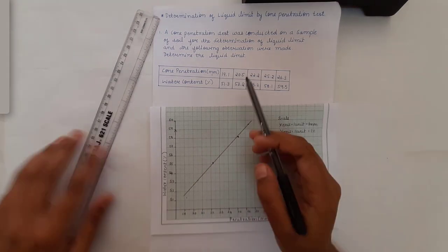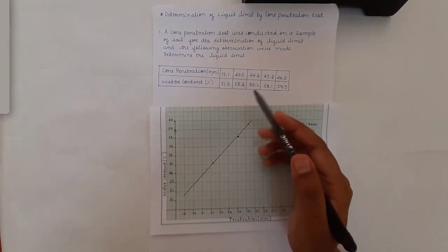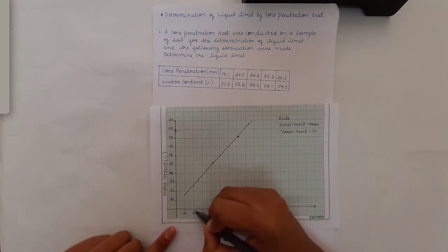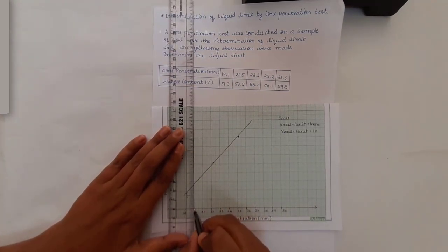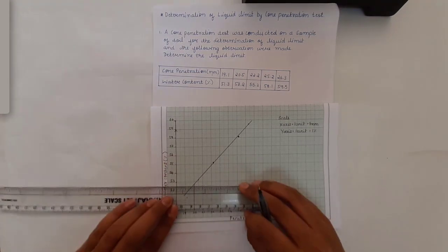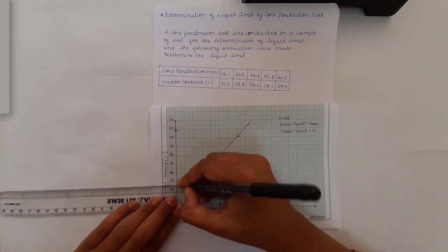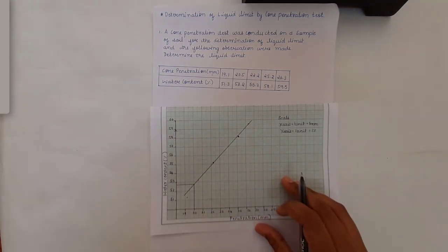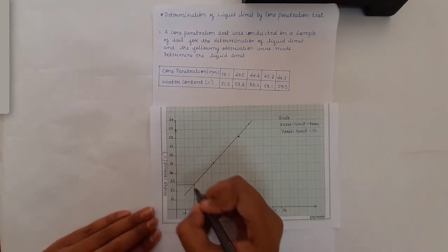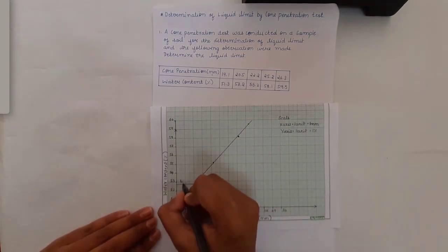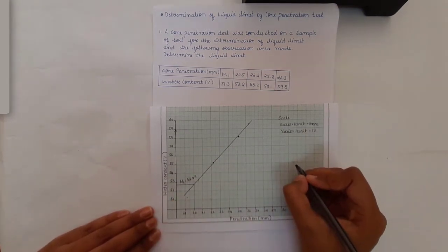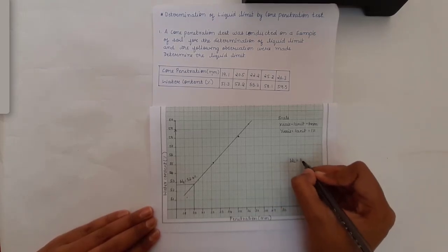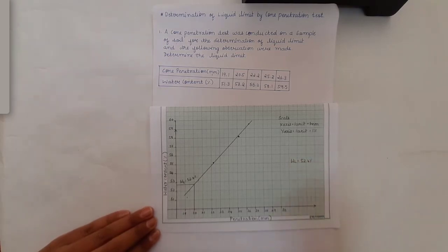Our ultimate aim is to calculate the liquid limit of the soil. For that, take 20 mm penetration on the x-axis, draw a vertical line upward to meet the best-fit line, then draw a horizontal line to touch the y-axis. The water content value obtained is the liquid limit. Here, the liquid limit wL is equal to 52.6 percent. So the liquid limit of the soil by cone penetration method is 52.6 percent.